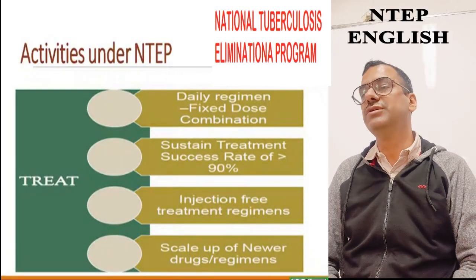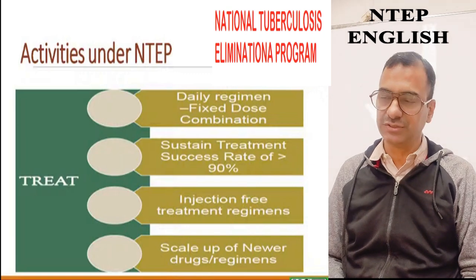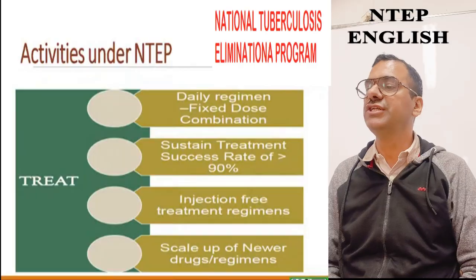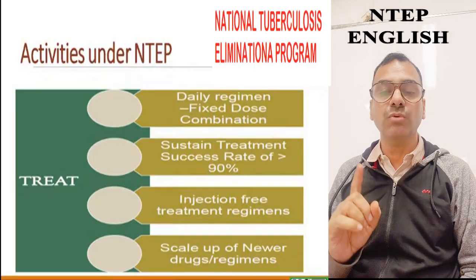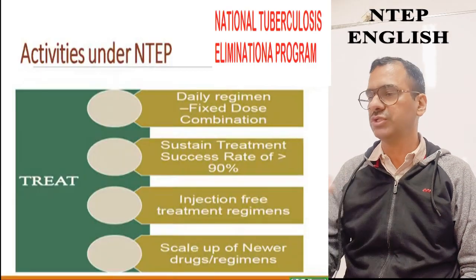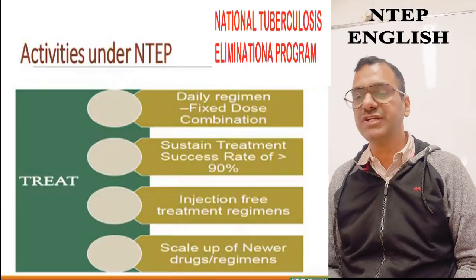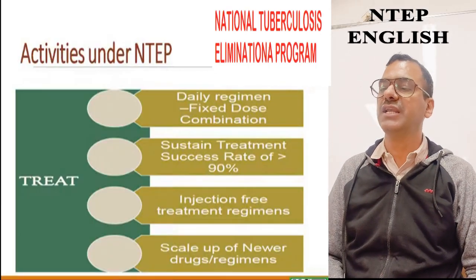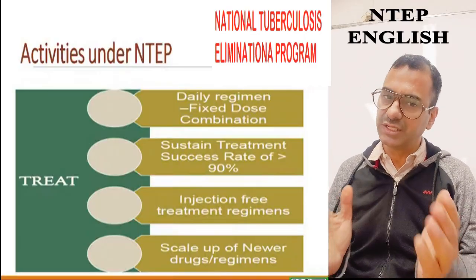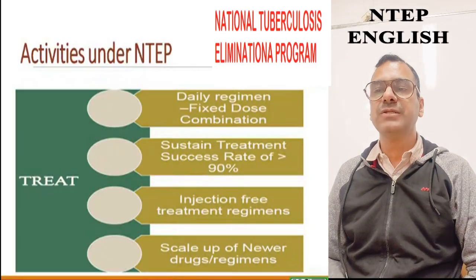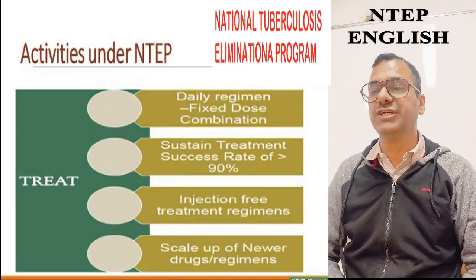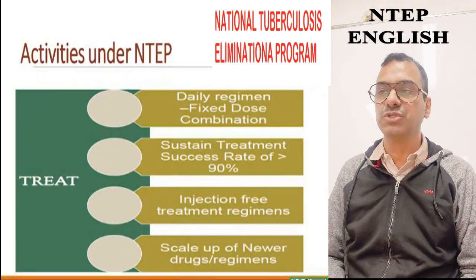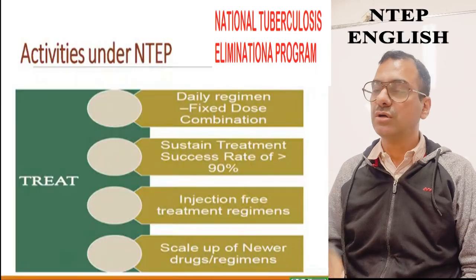Under the Treat strategy, a daily regimen of fixed-dose combination anti-tuberculosis drugs is to be given. The program targets a sustained treatment success rate of more than 90%. Treatment should be injection-free — only oral drugs — and newer drug regimens should be scaled up where possible.